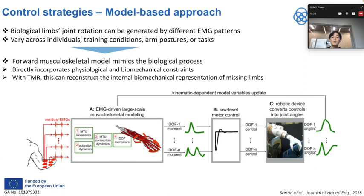Another way to control is the model-based approach. As biological limb movement can be generated by different EMG patterns, and this varies across individuals, a forward musculoskeletal model is proposed to mimic the biological process. This can directly incorporate physiological and biomechanical constraints, and combined with TMR surgery, this model-based approach has the potential to reconstruct the internal biomechanical representation of missing limbs.